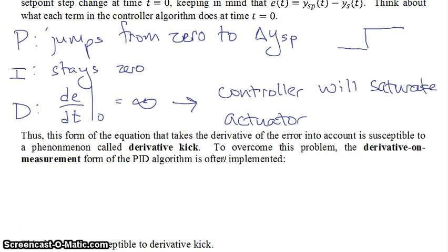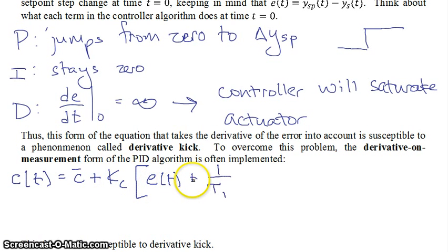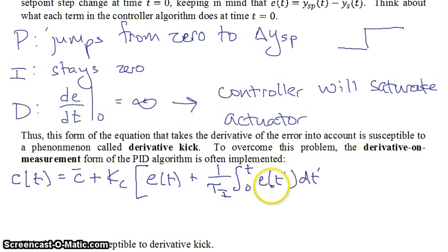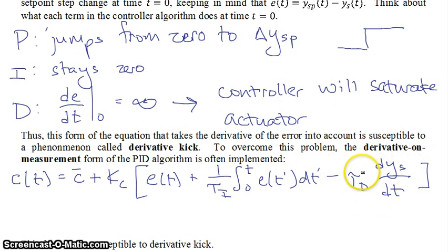So instead of the derivative of the error, we're looking at the derivative of the measurement. That form of the positional form algorithm — the derivative on measurement form — will be: c(t) equals your initial controller signal c-bar, plus kc times the quantity of your error at time t, plus 1 over tau_i times the integral from 0 to t of your error dt, minus tau_d times dy_sensor/dt. That's why it's called derivative on measurement.